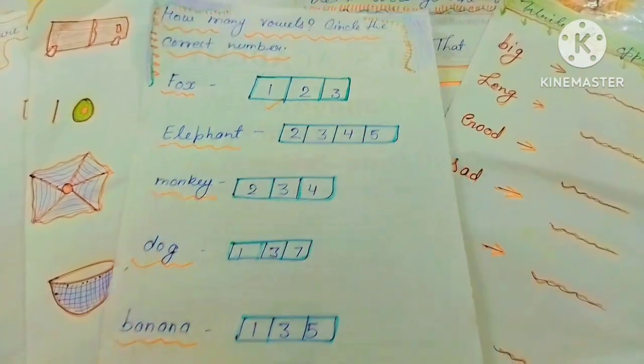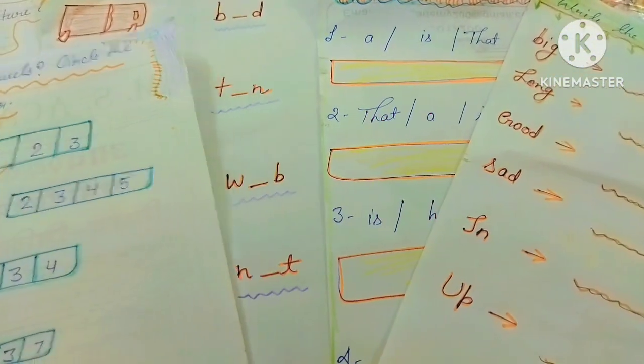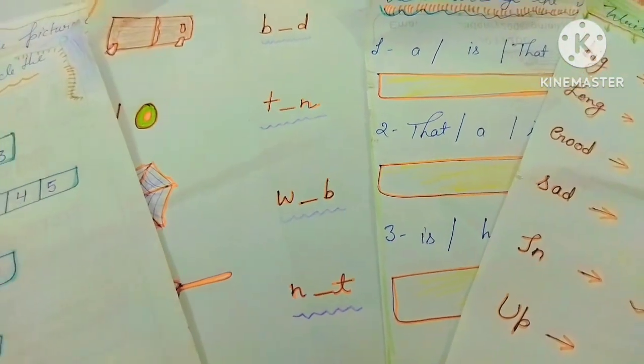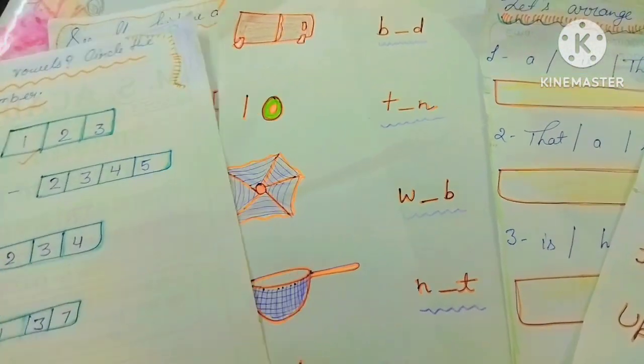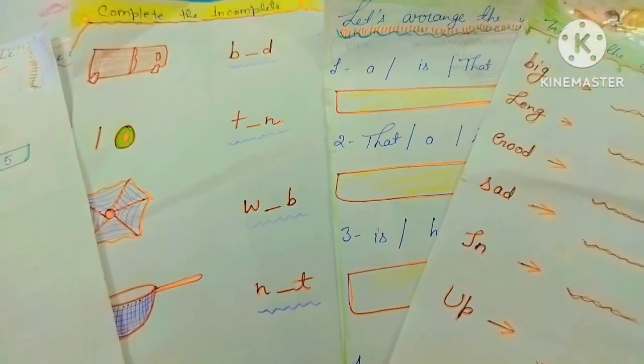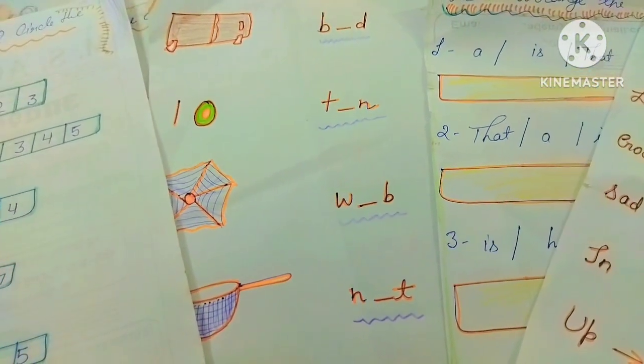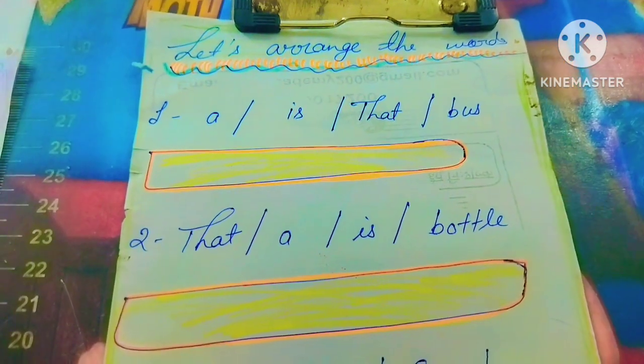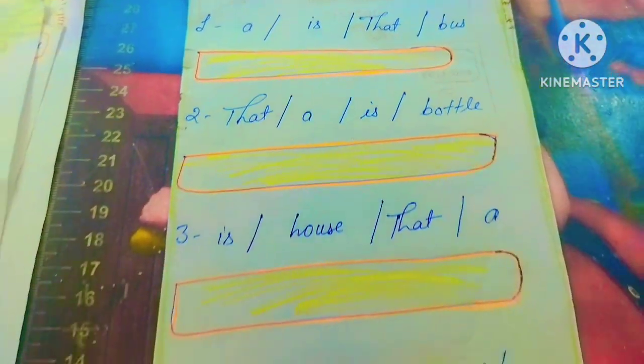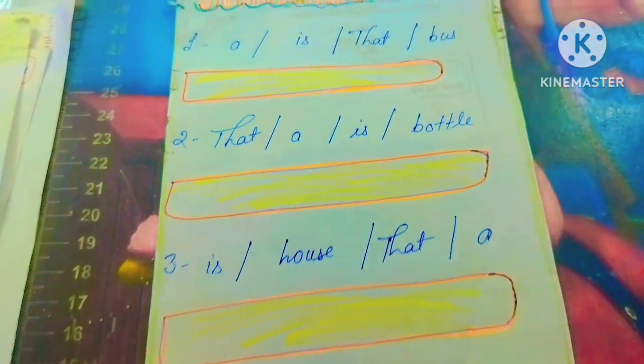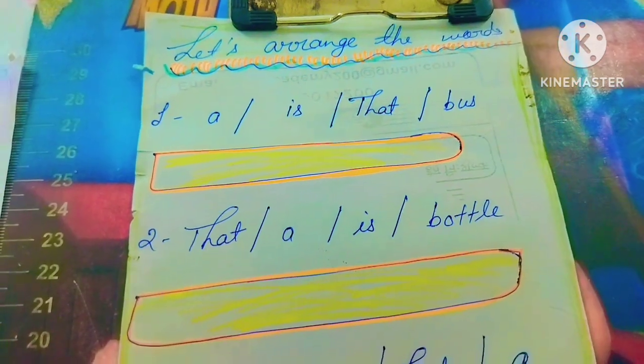So as you can see here what you have to do, these worksheets, you have to watch the whole video. It is not long, it is so small. We will use 10 English worksheets. The first worksheet is let's arrange the words.